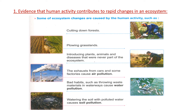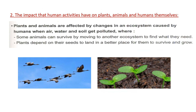Human activities like cutting down forests, plowing grasslands, and introducing plants, animals, and diseases that were never part of the ecosystem cause changes. Exhausts from cars and factories cause air pollution. Bad habits such as throwing waste material in waterways cause water pollution, and watering the soil with polluted water causes soil pollution.